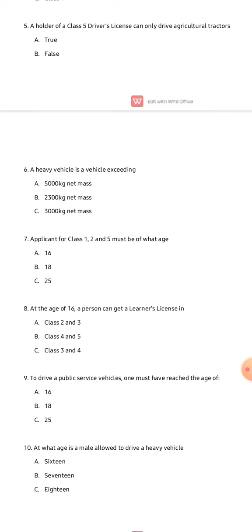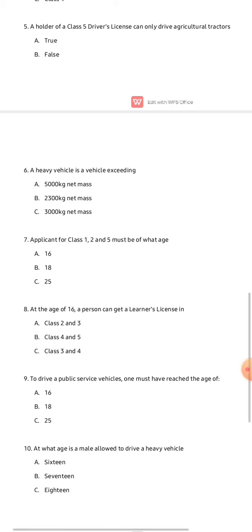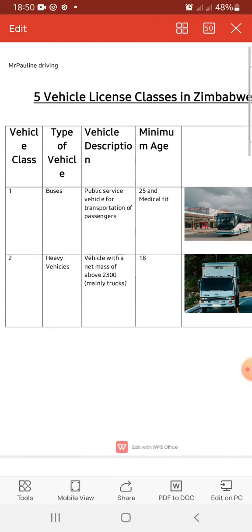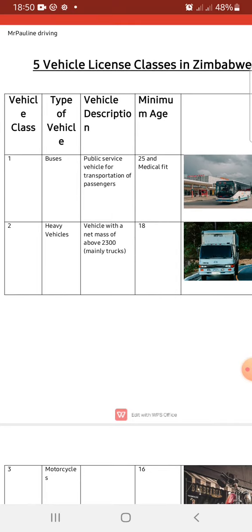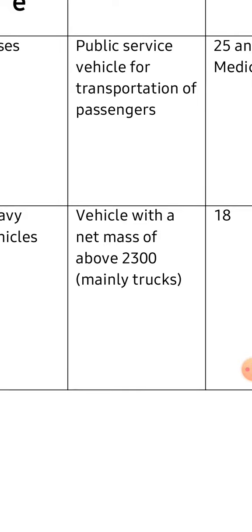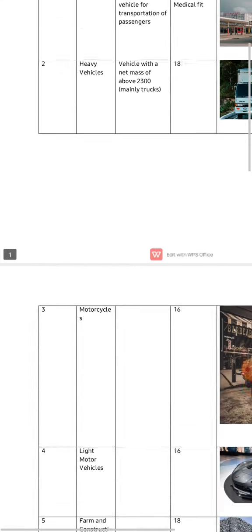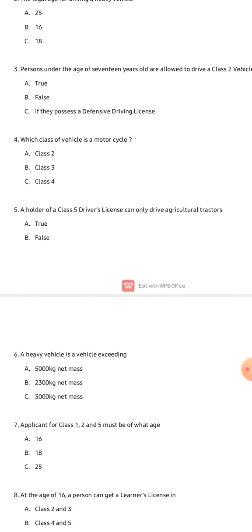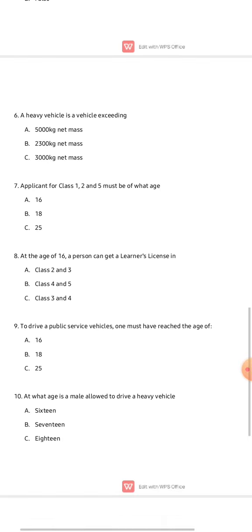Question six: a heavy vehicle is a vehicle exceeding — is it 5000 kilograms net mass, 2300 kilograms net mass, or 3000 kilograms net mass? Going back to our notes, a heavy vehicle is a vehicle with a net mass of 2300 kilograms. The correct answer is B — 2300 kilograms net mass.